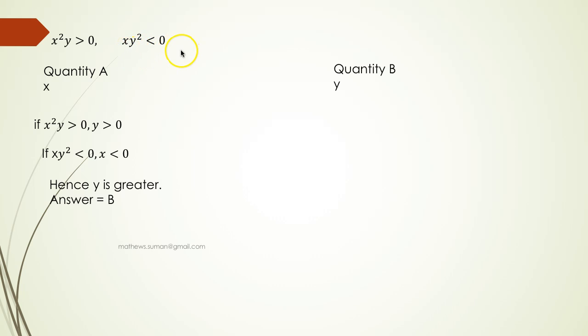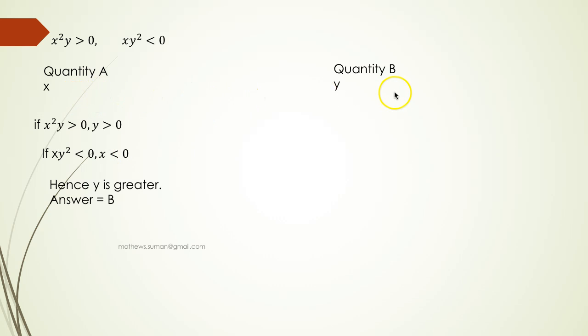Similarly, xy squared less than 0 means x is negative, so x is less than 0. Comparing quantity A and quantity B, the bigger number would be y, which is positive. So the answer is B.